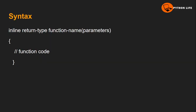So this is the inline function. Next is the syntax. The inline keyword is written first, followed by the return type, then the function name and parameters. Here is an example: inline, then the return type such as int, then the function name with arguments, and then the function body code. This is the syntax for the inline function.